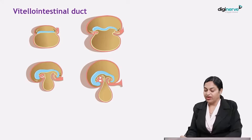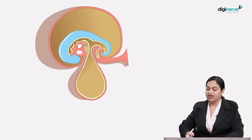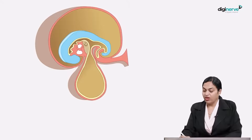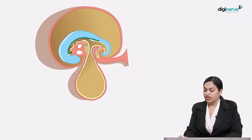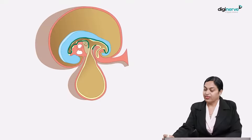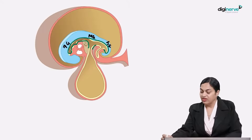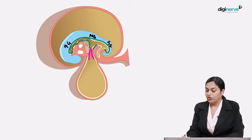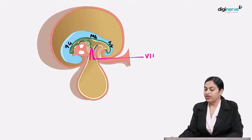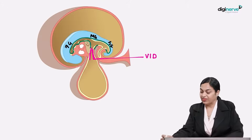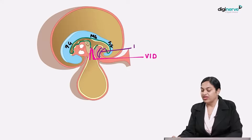Let's identify the vitelointestinal duct and the allantois. The gut tube is divided into foregut, midgut, and hindgut. The structure connecting the definitive yolk sac to the midgut is the vitelointestinal duct, and the opening into the hindgut is the allantois.